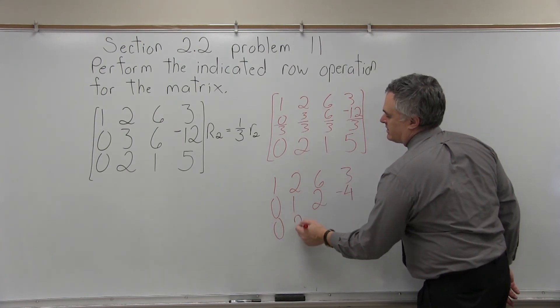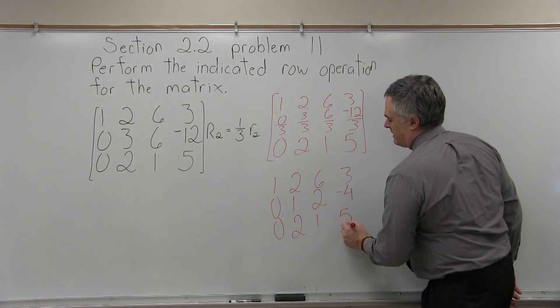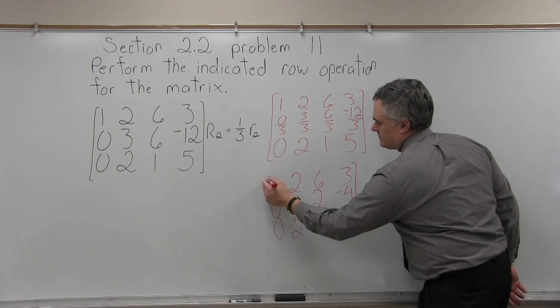And again, the bottom row can stay the way it is: 0, 2, 1, 5. And now we're done, with the brackets on.